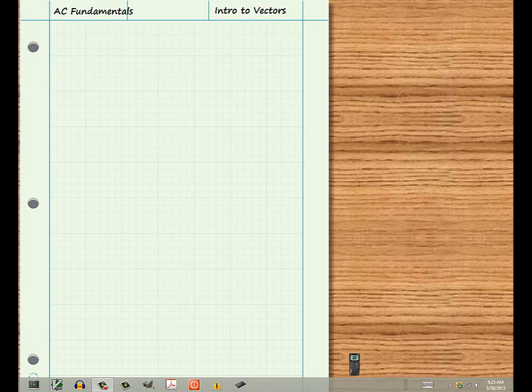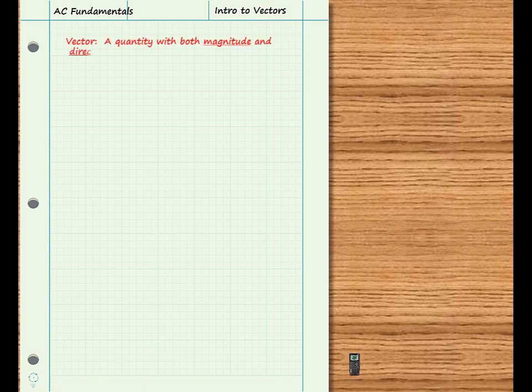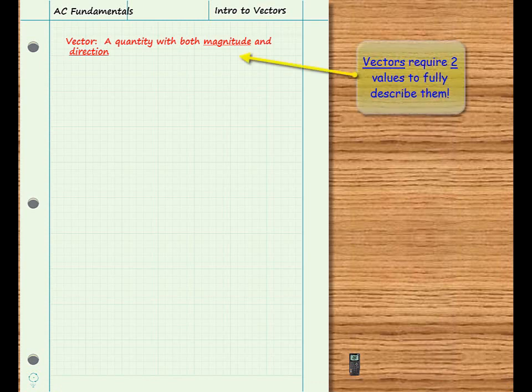Many concepts in AC circuits are best understood by considering them as vector quantities. A vector is a quantity with both magnitude and direction. Therefore, to completely specify a vector quantity requires more than one value.